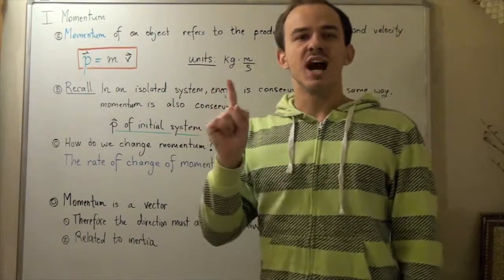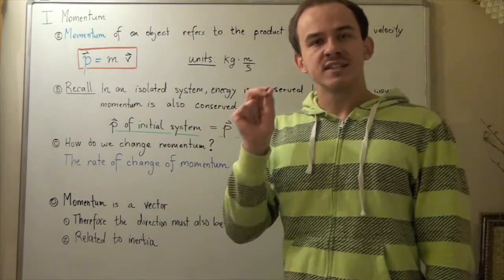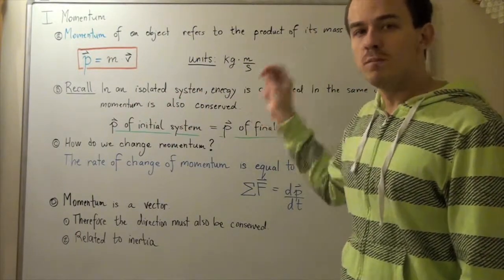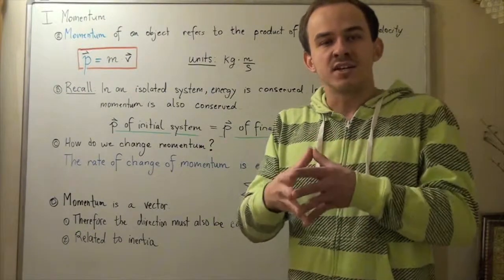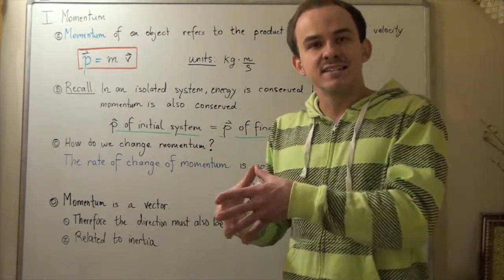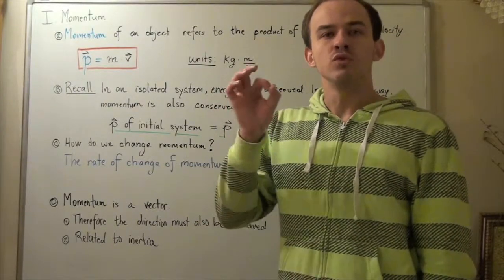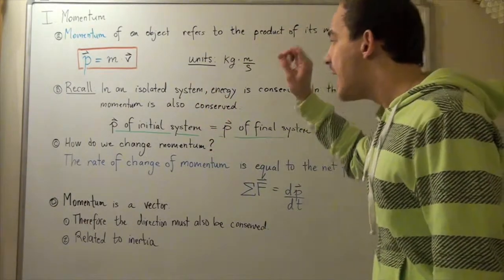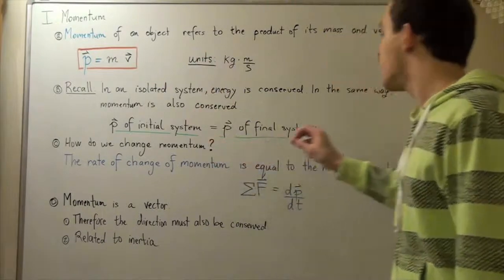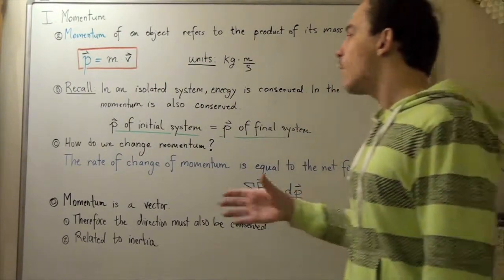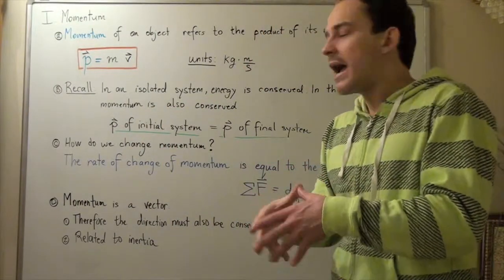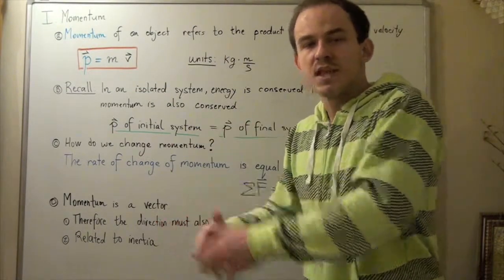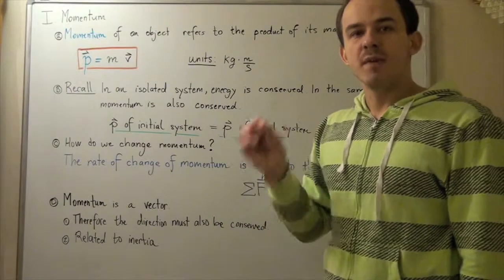Let's recall what the conservation of energy tells us. According to the conservation of energy, in an isolated system, energy will be conserved — it will remain constant. For example, if we consider our universe to be an isolated system, the energy of the universe will remain constant. It turns out that in the same way that energy of an isolated system is conserved, momentum is also conserved. So our initial momentum of the system is equal to the momentum of the final system — the momentum is not destroyed; it remains constant.